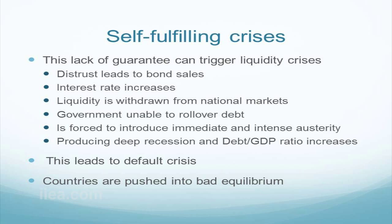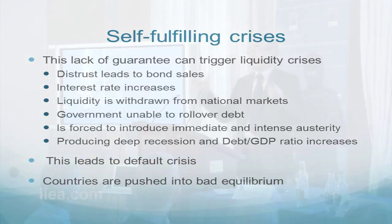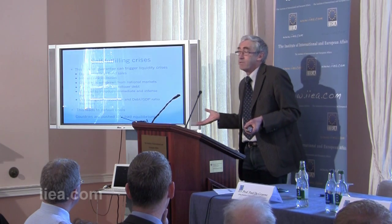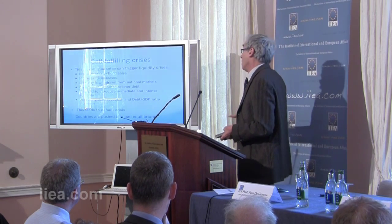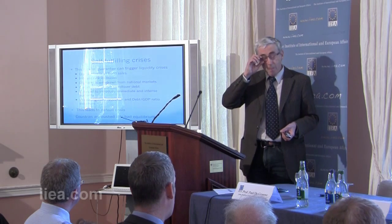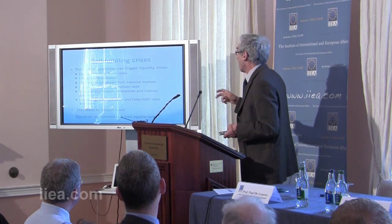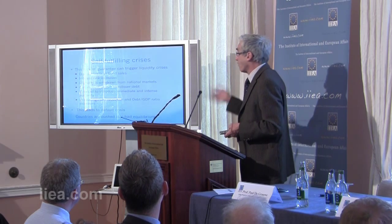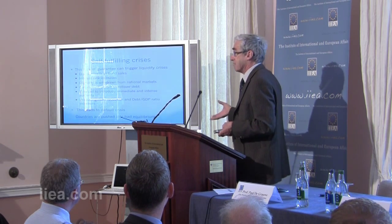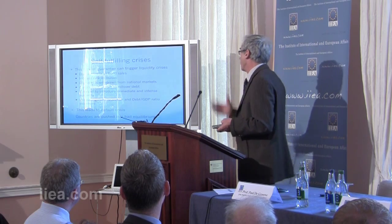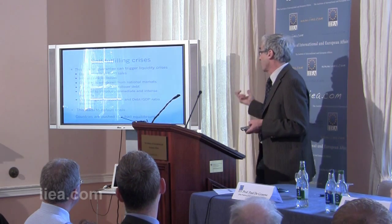Here is the scenario: when bondholders become fearful, they sell government bonds, interest rates increase, and liquidity is withdrawn from national markets. The euros obtained are invested elsewhere, drained out of the Irish money market, and the government finds itself unable to roll over its debt. If the governor of the Irish central bank calls Draghi, Draghi will not pick up the telephone. In a panic, the government must introduce immediate and intense austerity — cutting spending and raising taxes.